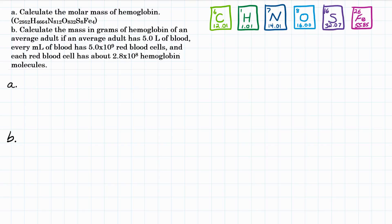Let's start with part A: calculate the molar mass of hemoglobin. Hemoglobin has this long chemical formula. To calculate the molar mass, we're going to take the number of atoms of each element in the formula and multiply by that element's molar mass. We'll do that for each element and add them all together. For carbon, in every molecule of hemoglobin, there are 2,952 atoms.